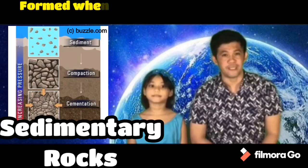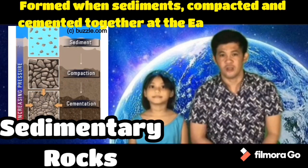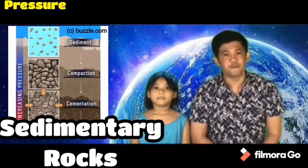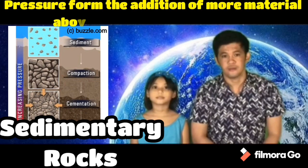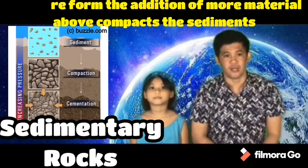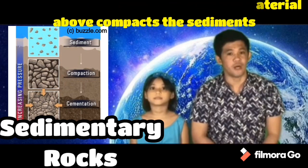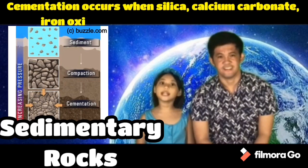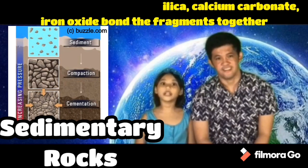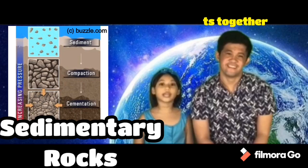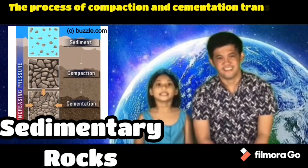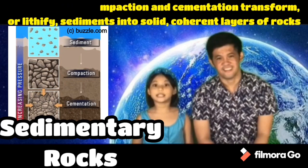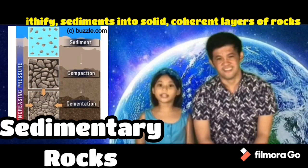Sedimentary rocks are formed when sediments, which is a loose accumulation of unconsolidated fragments, are compacted and cemented together at the earth's surface. After the fragments accumulate, often in a horizontal layer, pressure from the addition of more material above compacts the sediments, expelling water and reducing pore space. Cementation occurs when silica, calcium carbonate, or iron oxide bind the fragments together. The process of compaction and cementation transform sediments into solid coherent layers of rocks.